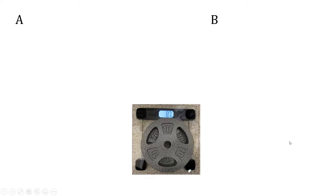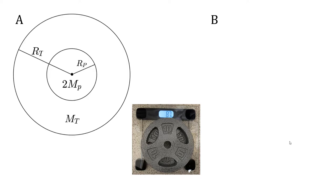Now we can calculate the moment of inertia for system A and system B. So for system A, we have the two plates in the center of the turntable, and the moment of inertia is the moment of inertia for the turntable plus two times the moment of inertia of a plate around its axis of symmetry.